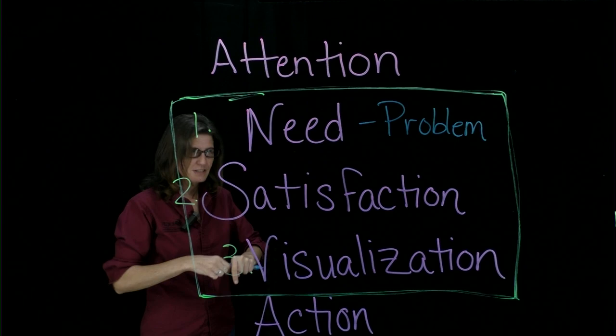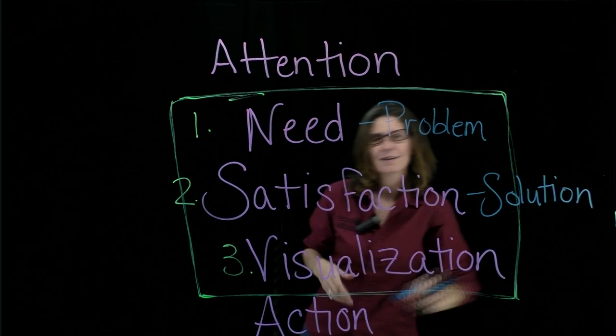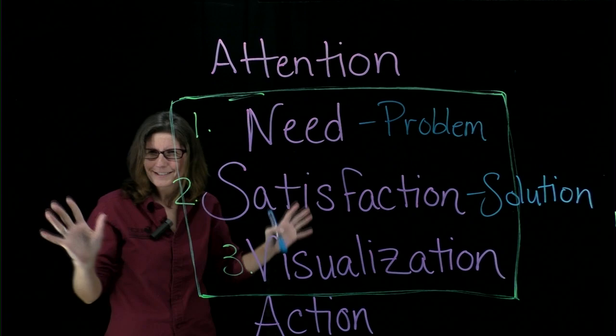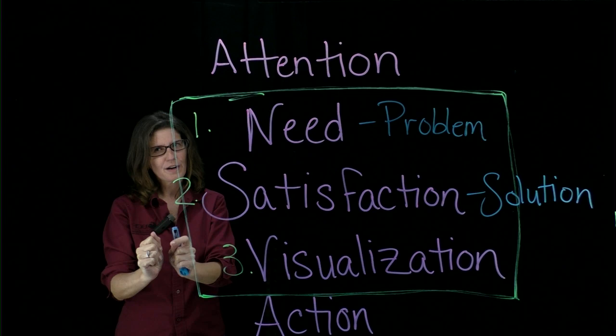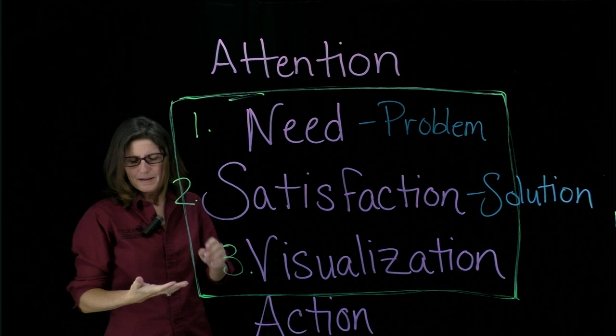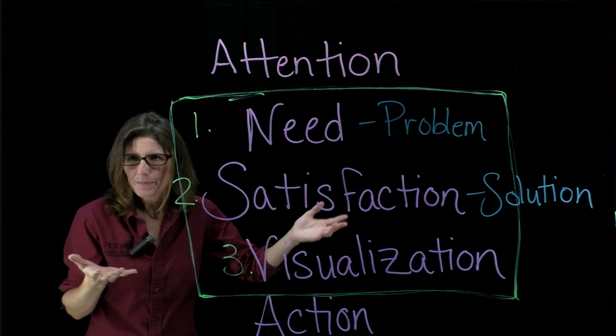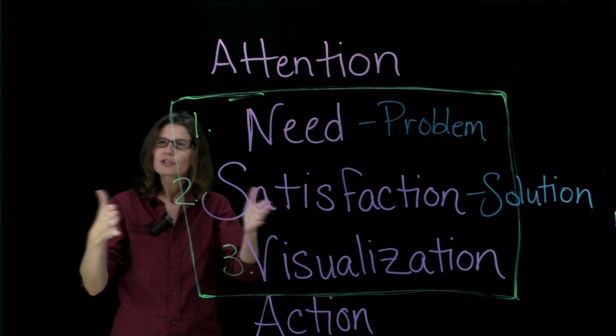The second main point is the satisfaction step, and the satisfaction step is where you provide the solution. You're explaining exactly what you want us to do, and you want to be specific — one single solution. You don't want to provide a whole bunch of different ideas. For example, if you're speaking about the Humane Society, don't say donate money, adopt a pet, and spay or neuter your animals — those are all great ideas, but if you give too many solutions, nobody is going to act on them.